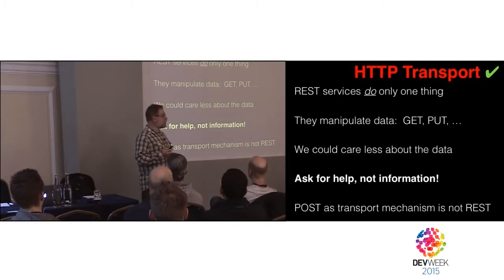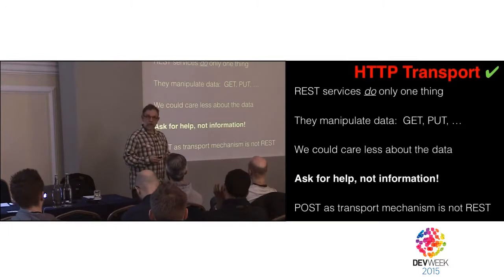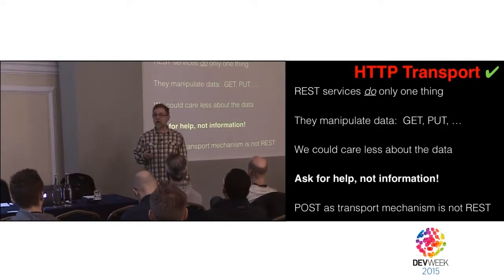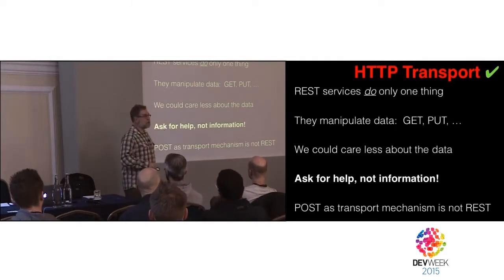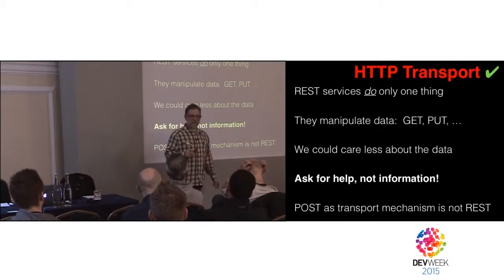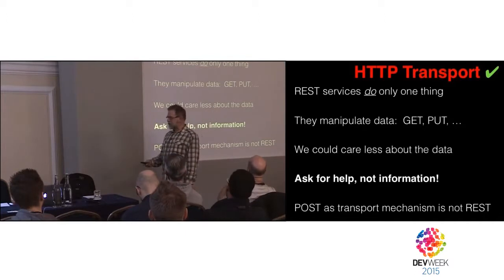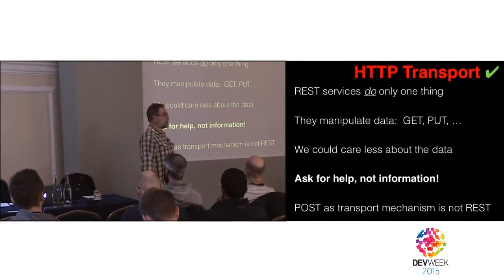If you're doing REST properly, the URL should specify a resource and the verb — whether it's a POST or a GET — controls what you do with that resource. REST is all about resource access; it's all about data, really. We just saw that data is not really a central part of what a microservice is — you're hiding the data. So a pure REST interface is of no value to us, and building a microservice across a REST framework just adds complexity you don't need.